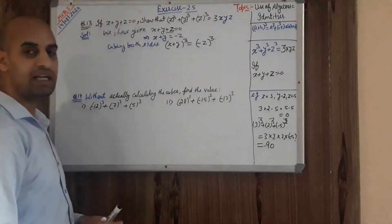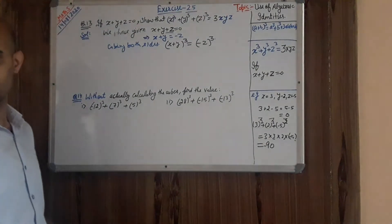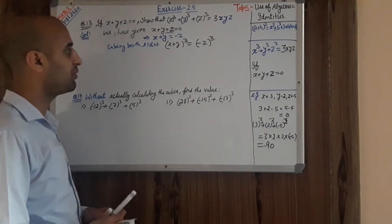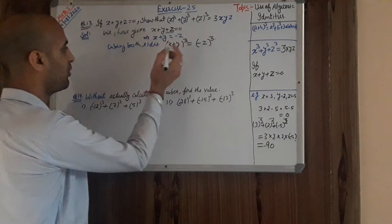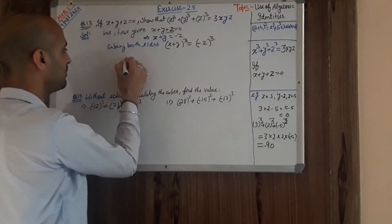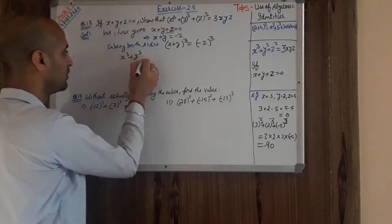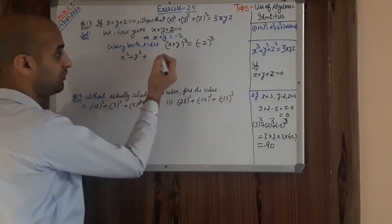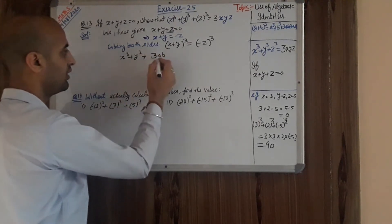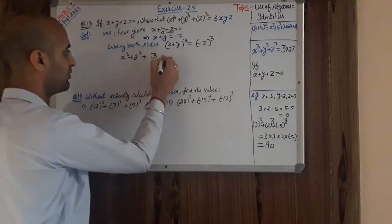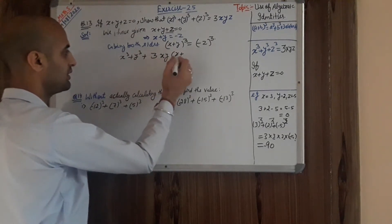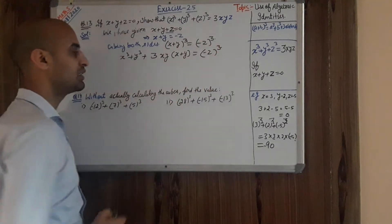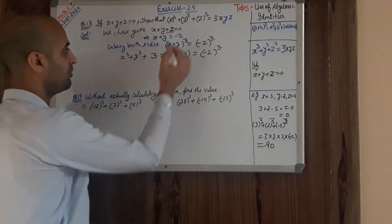Cubing both sides: (x + y)³ = (-z)³. Now apply the formula (a+b)³ = a³ + b³ + 3ab(a+b). So we get: x³ + y³ + 3xy(x + y) = -z³.